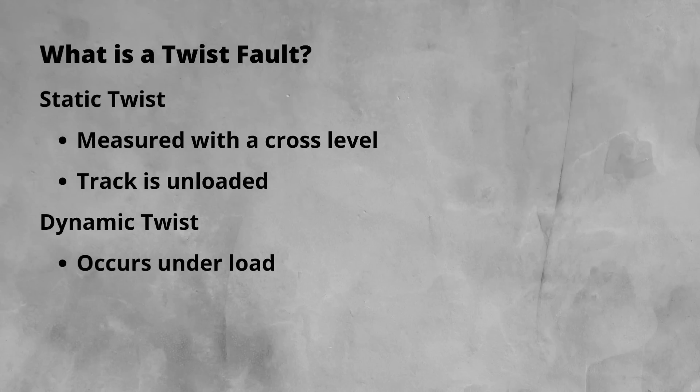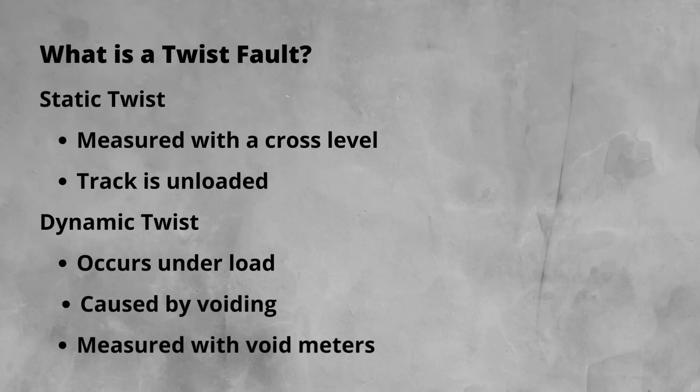It is most likely to be from voiding under sleepers. Equipment known as void meters are placed under the rail to measure the movement or voiding of the sleepers. We will look later at how dynamic and static twist combine, and how twist overall is calculated.